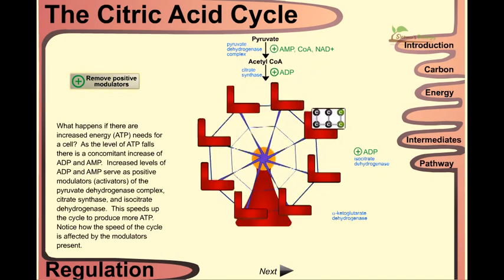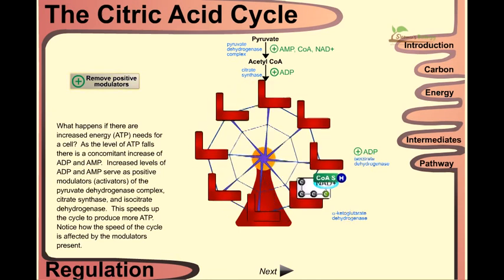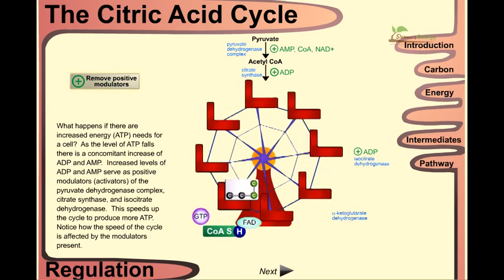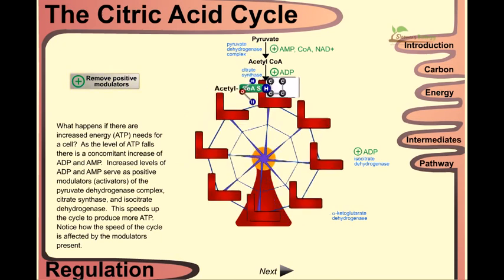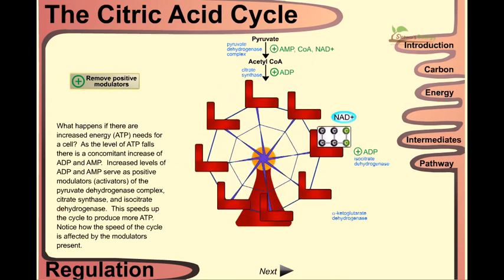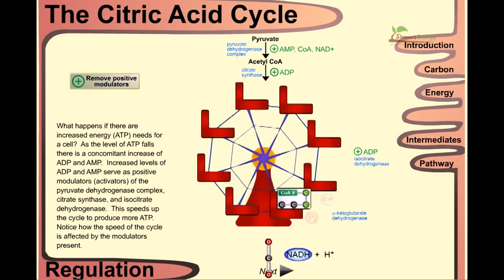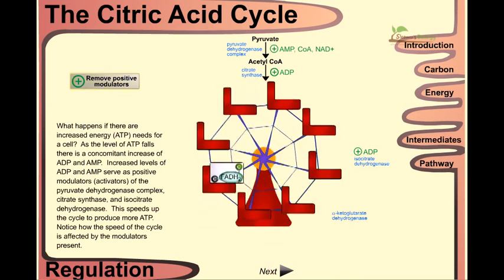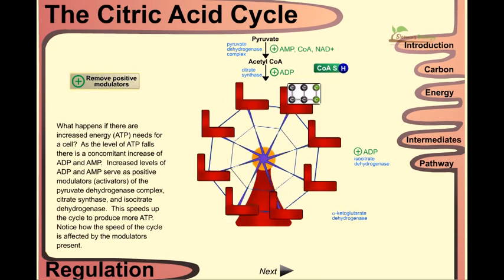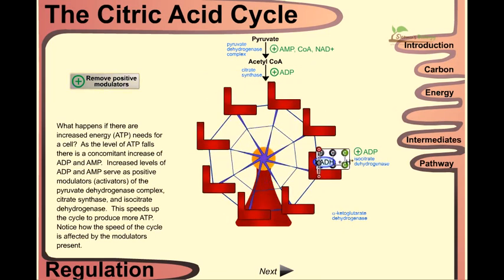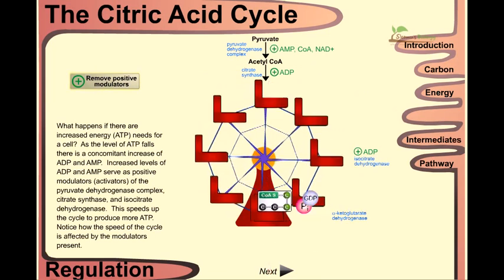The increase in ADP and AMP levels serve as positive modulators for the pyruvate dehydrogenase complex, citrate synthase, and isocitrate dehydrogenase. These enzymes will speed up the cycle to produce much more ATP throughout this TCA cycle. Notice how the speed of the TCA cycle is affected by the modulators present.